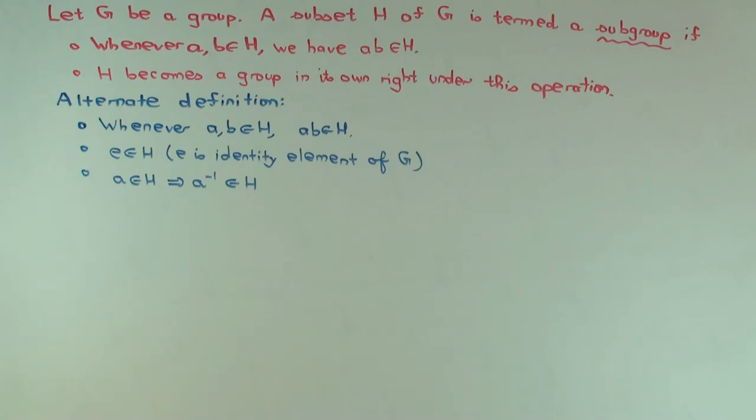Because of the second sentence, H becomes a group in its own right. Yeah, what does that mean? How is that different from just putting all these conditions? It means there is an e and inverse in H, but we don't know if that e and inverse is the e and inverse in G. Wow, that's absolutely correct. Awesome. So that's the problem.